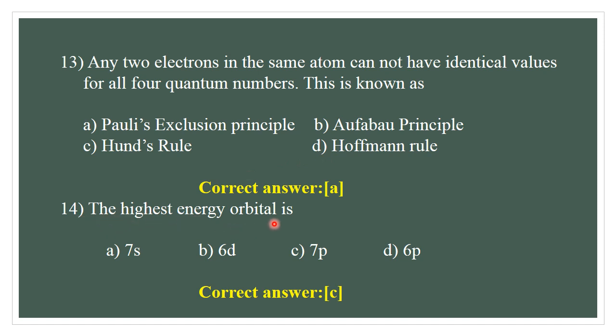Question number 14. Which is the highest energy orbital? The highest energy orbital is 7P. Therefore, the correct answer is C.